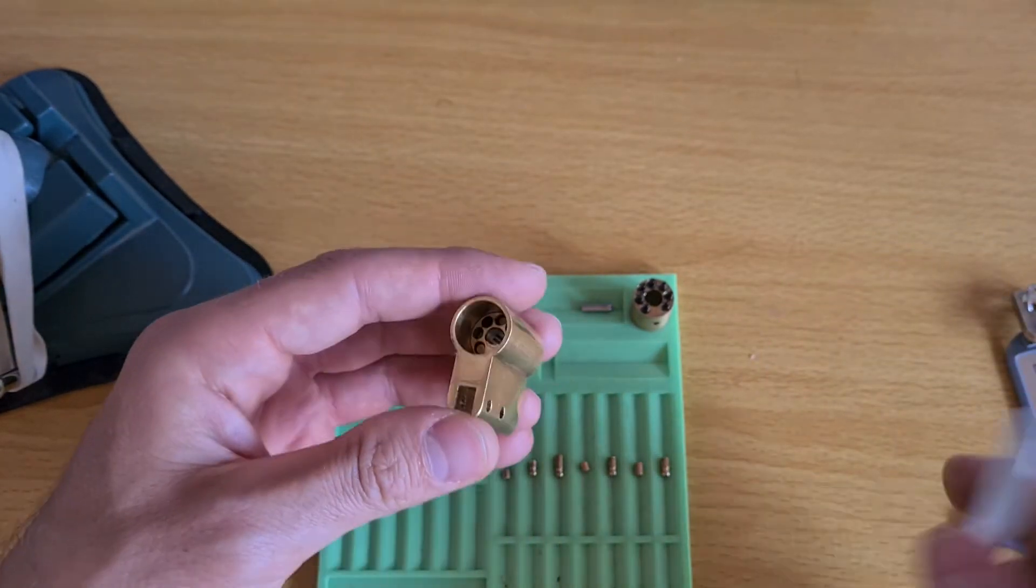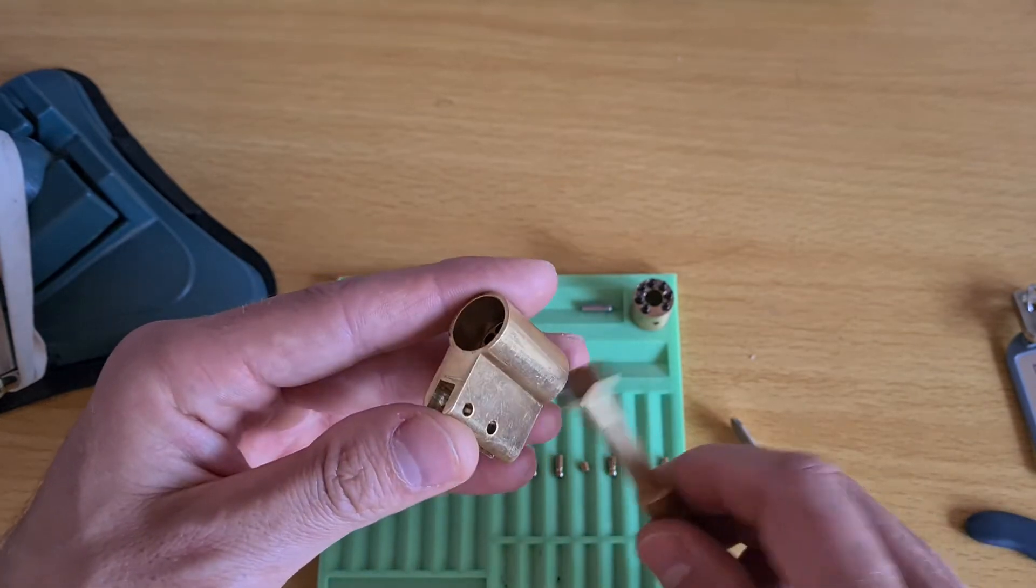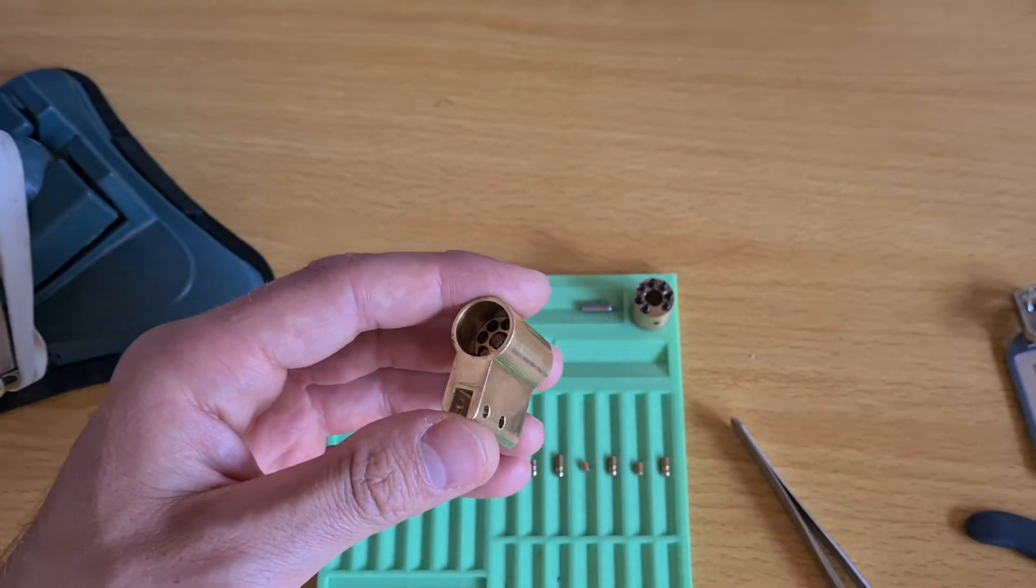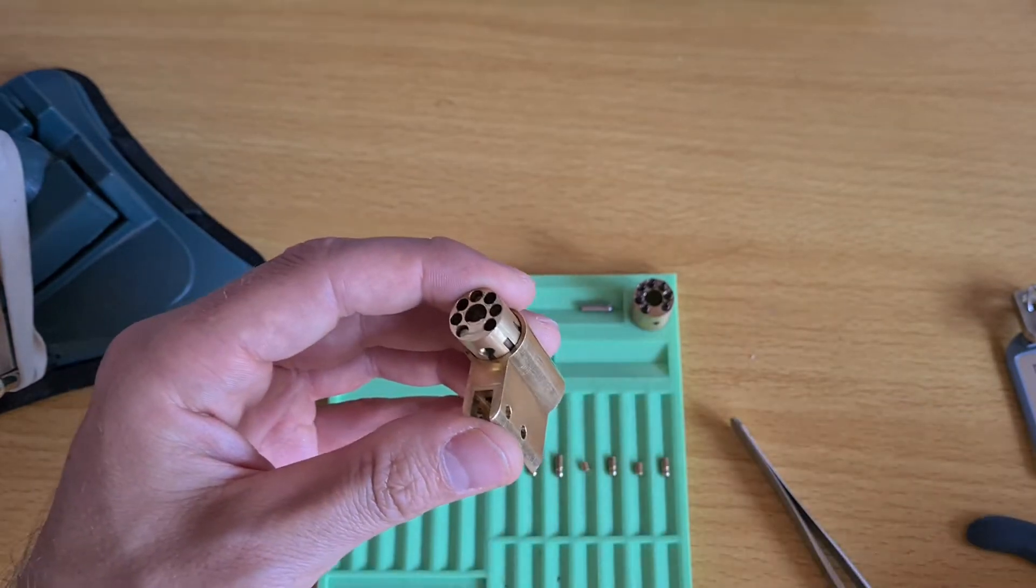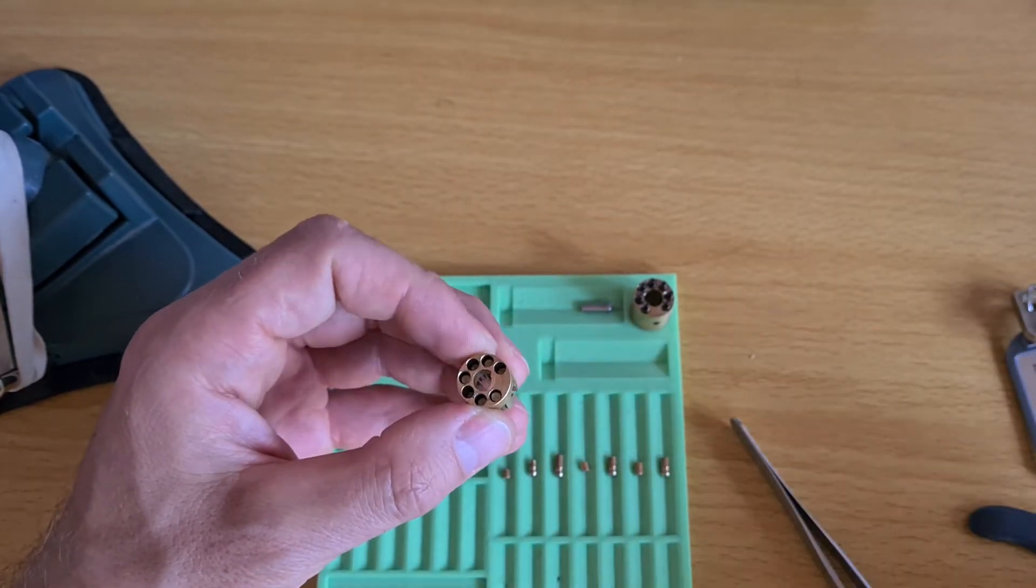Now when that is done let's take the key part of the core out and have a look at the key pins.